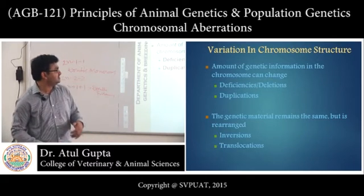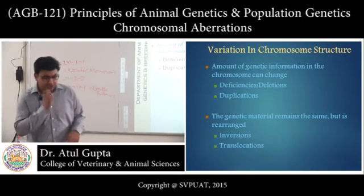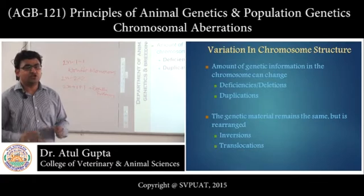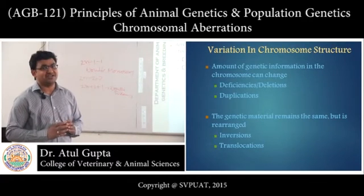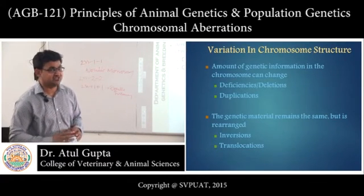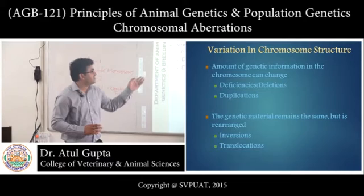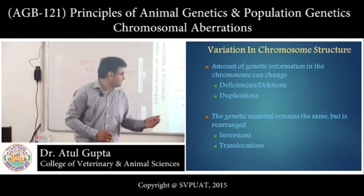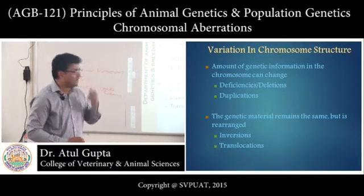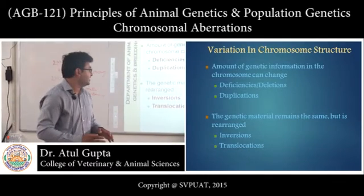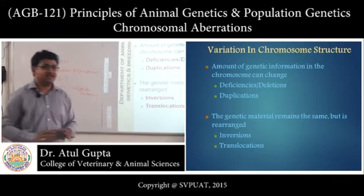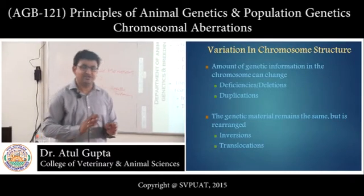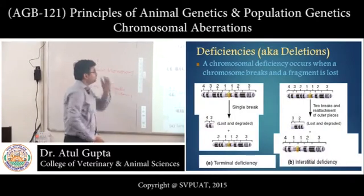Now we will discuss variation in chromosome structure. Due to deletion and duplication, the total amount of genetic material will change. In inversions and translocation, the genetic material remains the same but the arrangement is changed — that is, genes are rearranged.